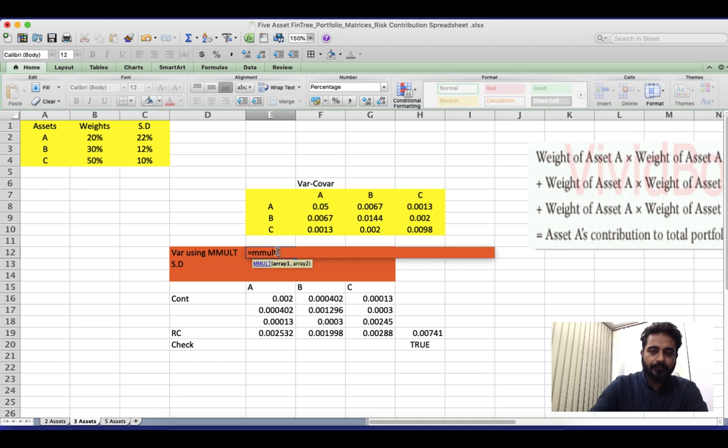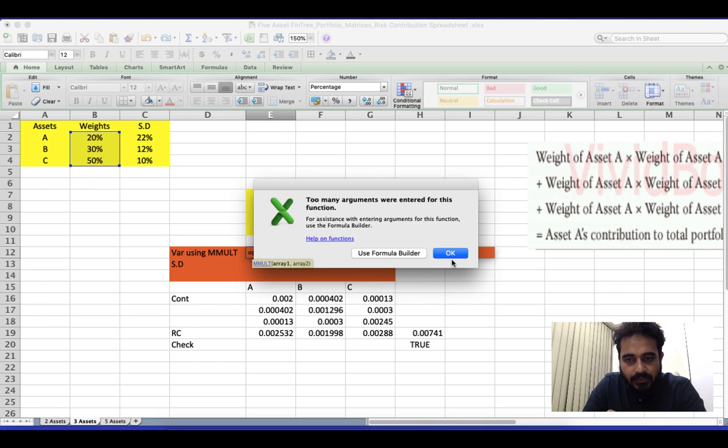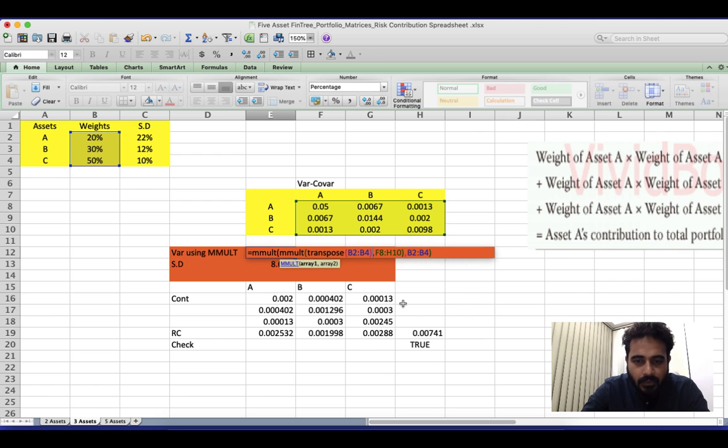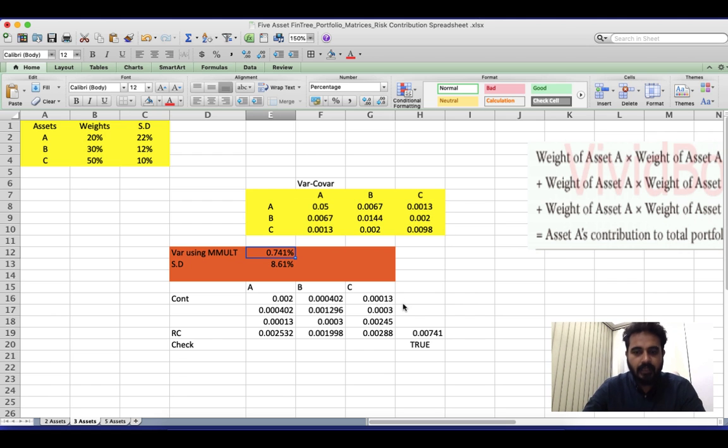So is equal to MMULT bracket open. We need that to be a row vector. So I'm going to say transpose, select this part, comma, select this entire variance covariance matrix. So the multiplication of these two terms is done. Then go at the beginning, open another MMULT bracket open. Now this becomes one term, comma. Now we just select the column vector as it is and then control shift enter. I made a mistake. Transpose bracket close, comma this. Hopefully it works now. Yeah, it does. So I forgot to put in a bracket close sign there.